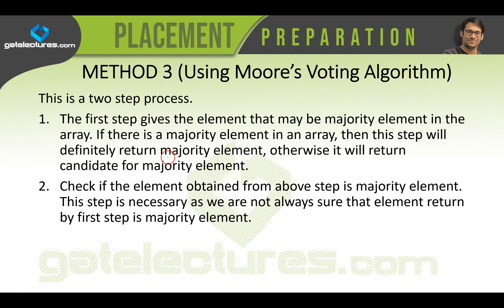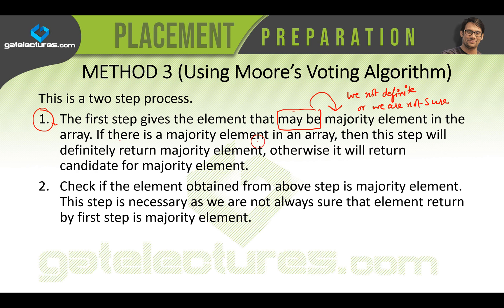This algorithm is a two-step process. The first step gives the element that may be the majority — note the word 'maybe,' we are not sure whether it is a majority element or not. If there is a majority element in an array, this step will definitely return it. But if there is no majority element, it will return a candidate of the majority element, meaning that element might not be the majority but is a candidate.